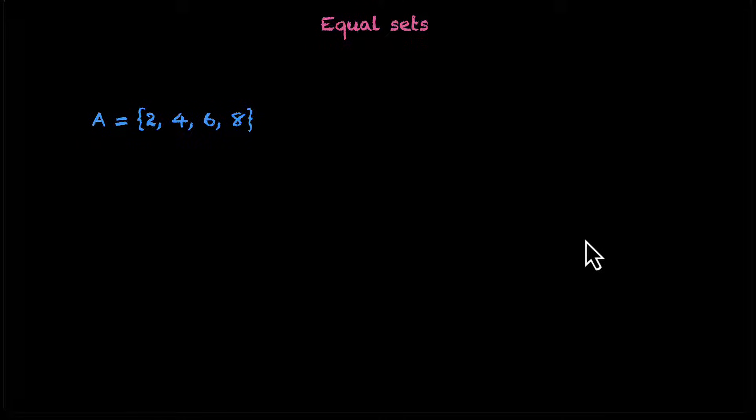Let's think about it using an example. We have the set 2, 4, 6, 8. This is the set A. It's the set of first four even natural numbers.